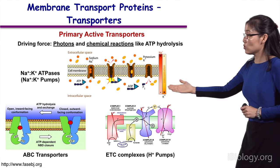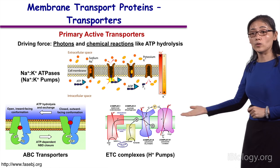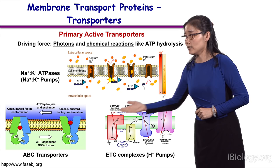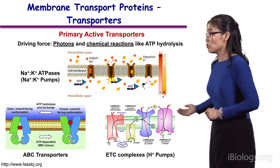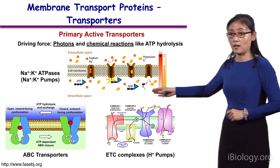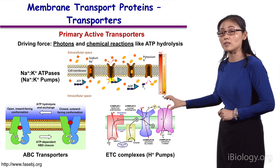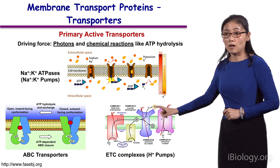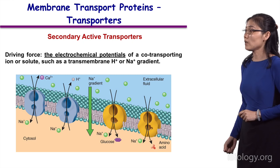ABC transporters, known as ATP-binding cassette transporters, have an ATP-binding domain, and ATP binding, hydrolysis, or dissociation of ADP and phosphate all may cause conformational change of the transmembrane region to complete alternating access. Also shown here are the complexes involved in the electron transport chain in mitochondria or bacteria — complexes 1, 3, and 4 are actually proton pumps. They harness the energy released from electron transfer, or the redox reaction, to pump protons from the matrix to the intermembrane space of the mitochondria. The maintenance of this proton gradient across the inner membrane of the mitochondria is extremely important, because this is the direct energy to drive the synthesis of ATP. So this transmembrane proton gradient is called the proton motive force, and these complexes are primary active transporters.